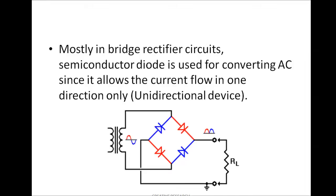We will see how the bridge rectifier works and how it converts AC to DC in our next slides. Diodes are used for converting AC to DC. Also, SCRs and thyristors are used for different conditions — we use thyristors for controlling and converting AC to DC.